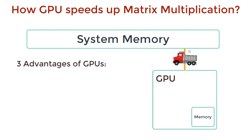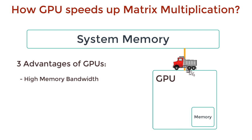The first is high memory bandwidth — that is, the amount of data that can be transferred to and from memory. GPUs have a high memory bandwidth; they can transmit large chunks of a matrix between different GPU parts. In the last video, we saw this by comparing a CPU to a small yet fast Ferrari and a GPU to a slow but very high capacity truck.